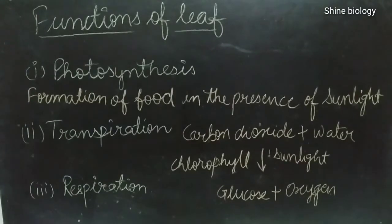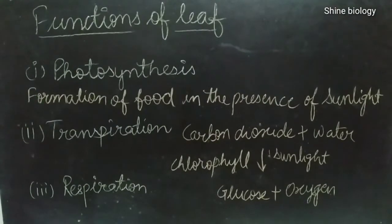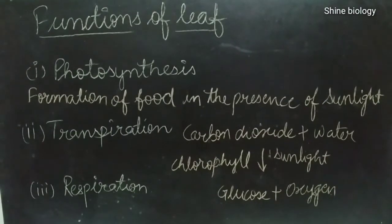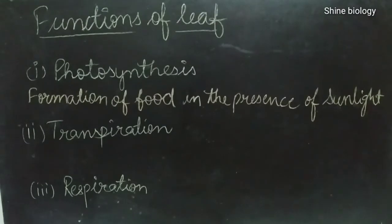The raw materials for photosynthesis are carbon dioxide and water. Carbon dioxide is obtained from the environment — animals release carbon dioxide during breathing — and plants take water from the soil through roots. In the presence of sunlight and chlorophyll, these raw materials form glucose and oxygen, which is released into the environment.